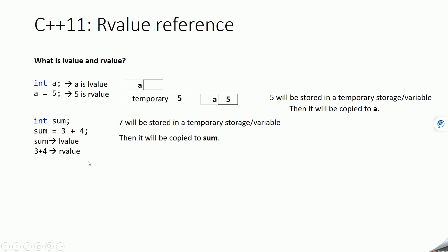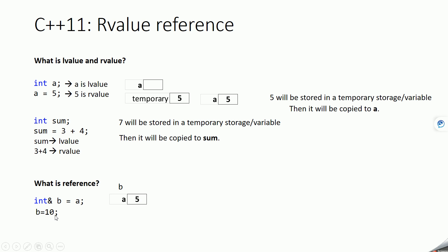Now let's see what a reference is. A reference is an alias to an l-value — it points to an already existing memory location or variable. Here we are creating a reference variable `b` that will point to `a`. So both `a` and `b` will point to the same memory, and the content of `a` is 5. Using `b` you can also change the content of that memory location. When you say `b = 10`, the value of `a` will also change to 10 because `b` is an alias of `a` — both point to the same memory location.